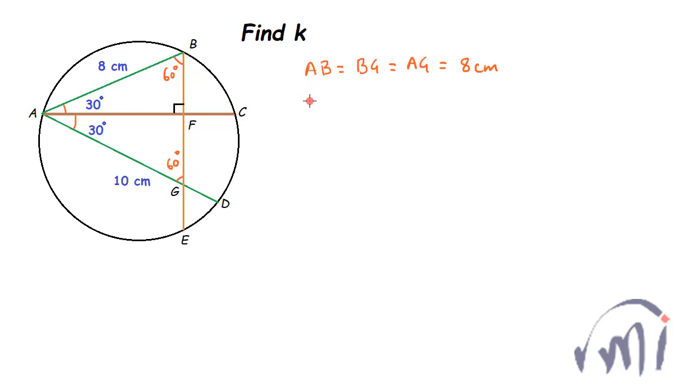So that means BF is equal to FG and both of them are equal to 4 centimeters. This total is 8 centimeters, so half of that will be 4 centimeters.